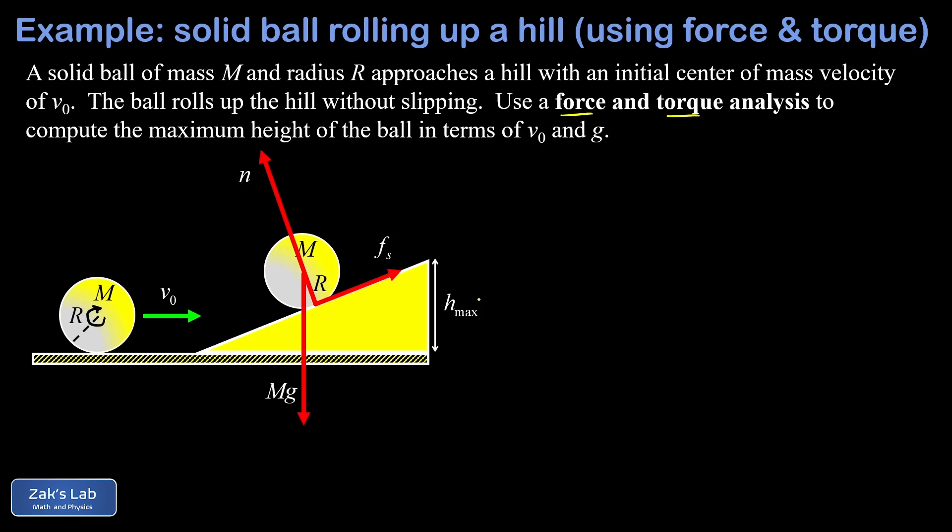So that friction force is responsible for slowing the spin rate of the ball. It also points up the ramp, making it responsible for converting that rotation into the added height. So hopefully that aids your intuition a little bit.